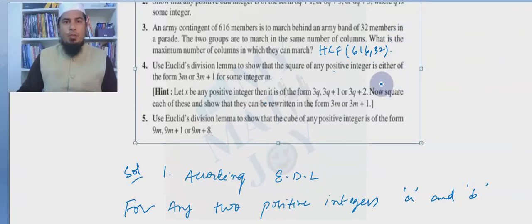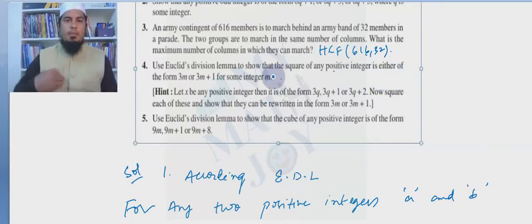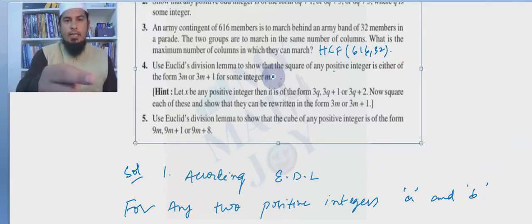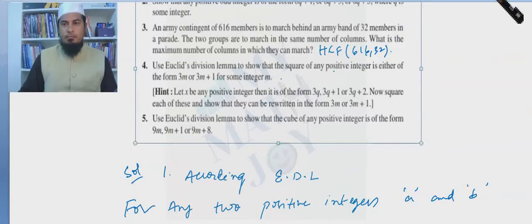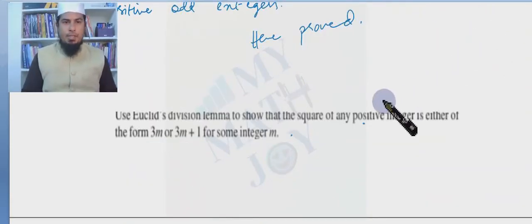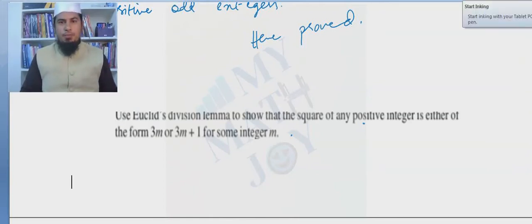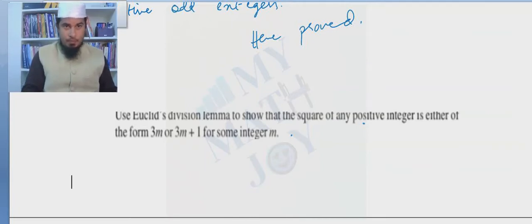Let's move to question number four — a very interesting question. He wants us to prove a mathematical statement using Euclid's division lemma. The question says: use Euclid's division lemma to show that the square of any positive integer is either of the form 3m or 3m+1.